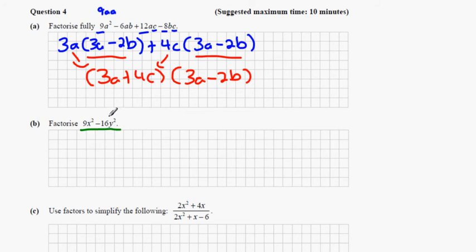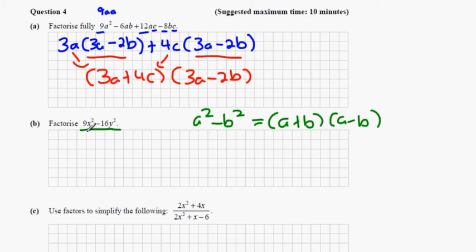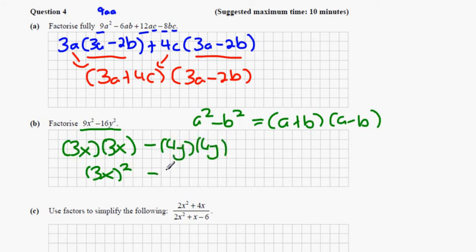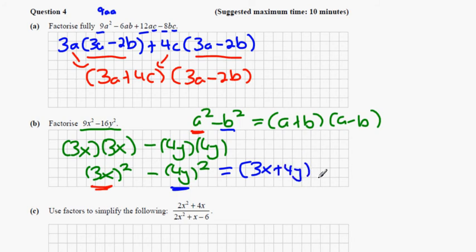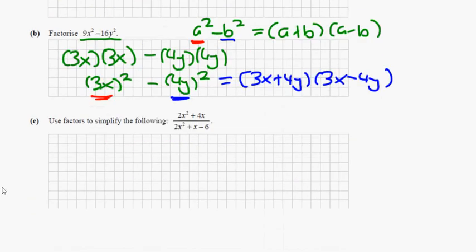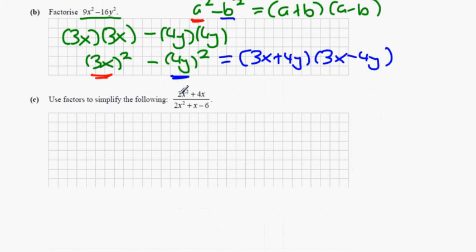Part 2 — this is the difference of two squares. We square root 9x² to get 3x, and square root 16y² to get 4y. Instead of a and b we have 3x and 4y, so the answer is (3x + 4y)(3x − 4y).